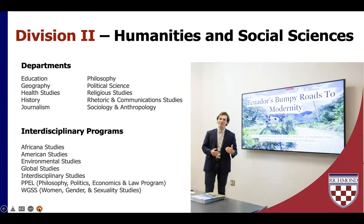The School of Arts and Sciences offers support for interdisciplinary study through programs offering majors within the Bachelor of Arts degree: American studies, classical civilization, cognitive science, environmental studies, film studies, geography, global studies, philosophy/politics/economics/and law (PPL), and women, gender, and sexuality studies (WGSS), with Africana studies newly launching this fall. Environmental studies, interdisciplinary studies, and mathematical economics are the interdisciplinary major options within the Bachelor of Science degree.